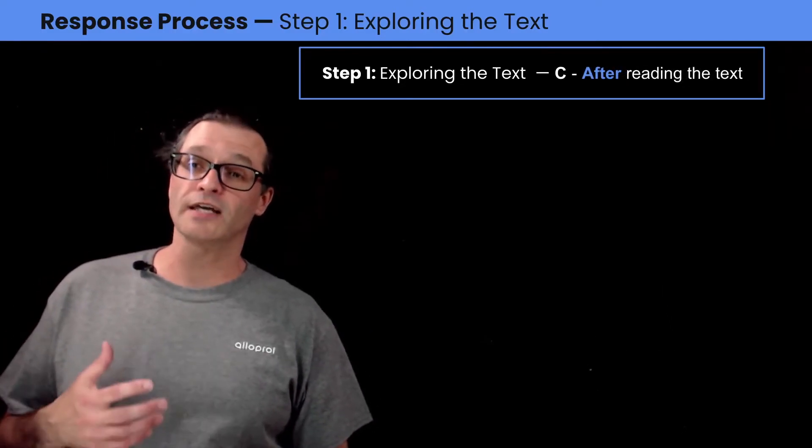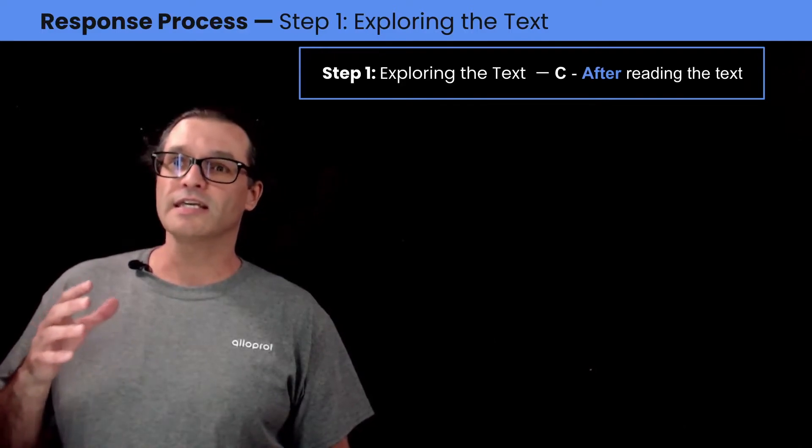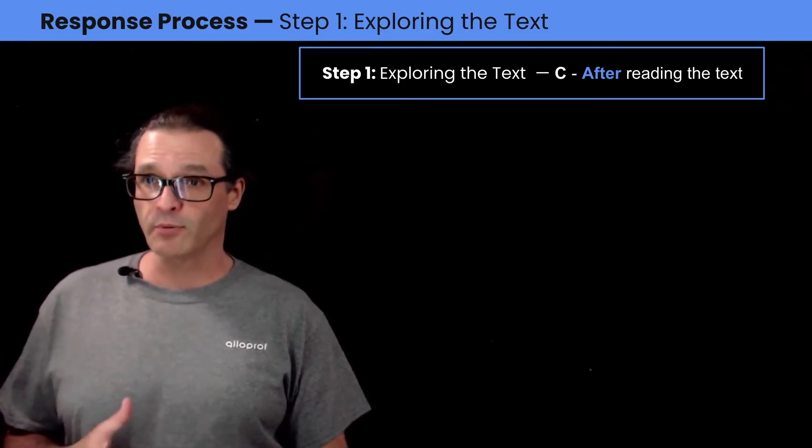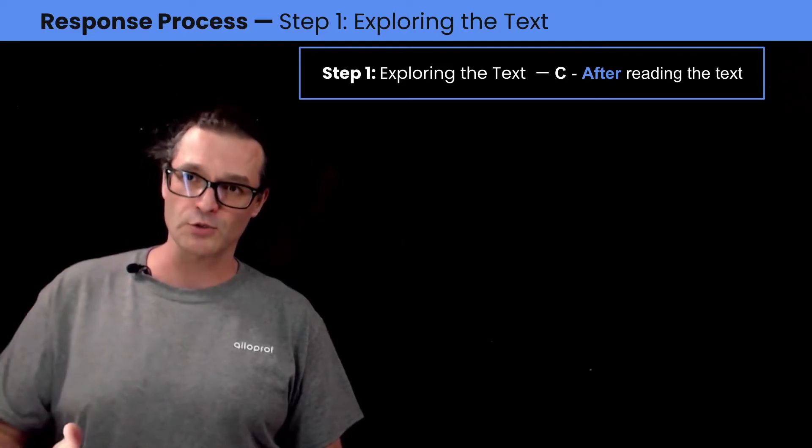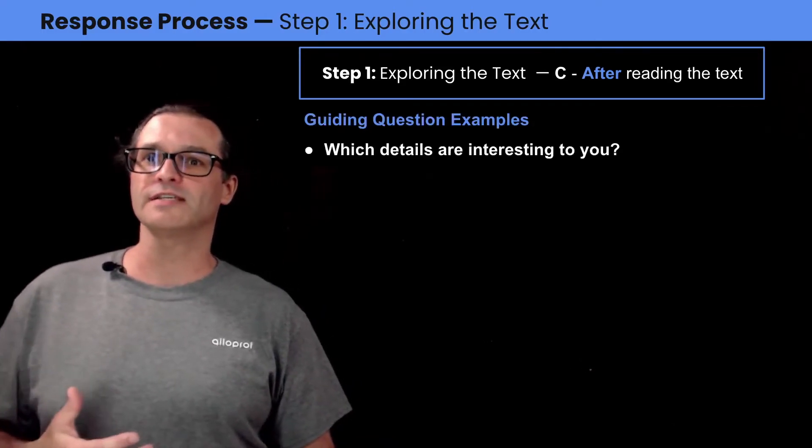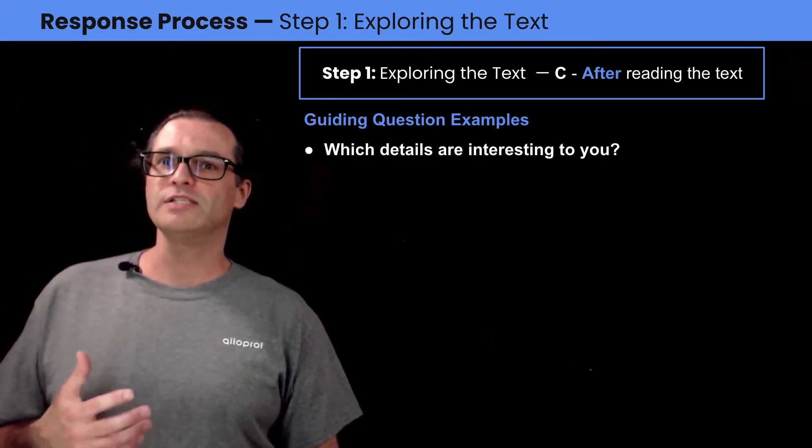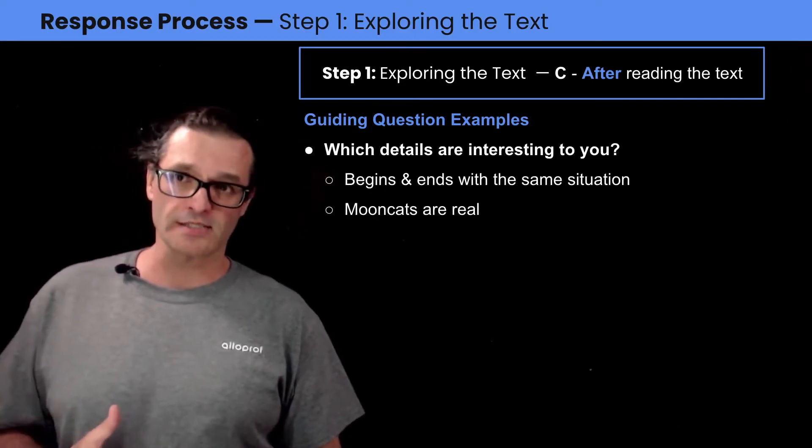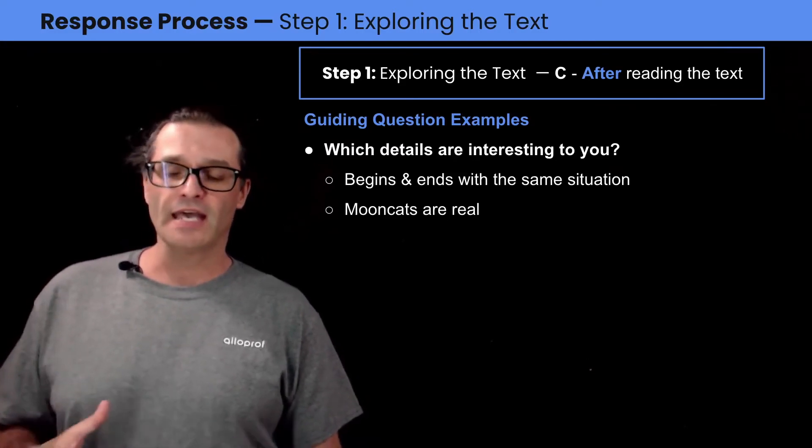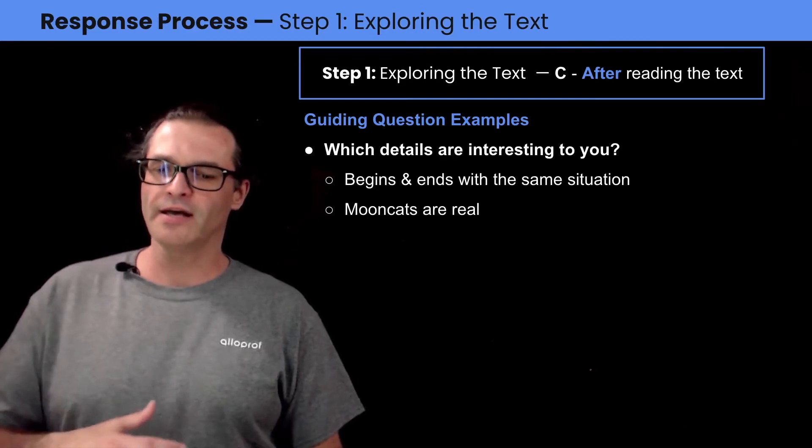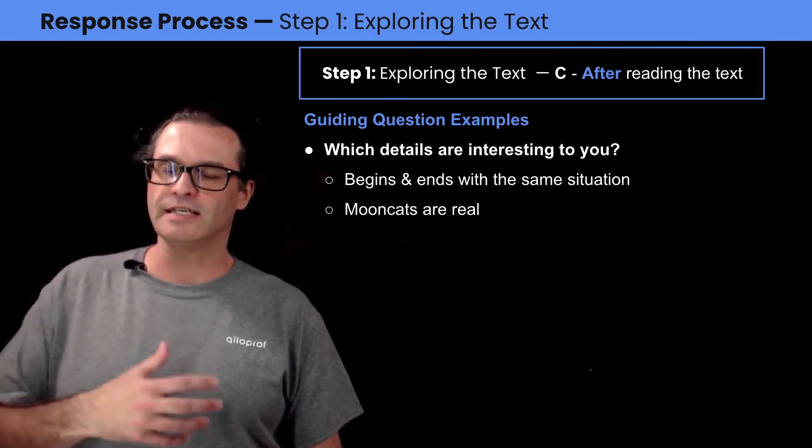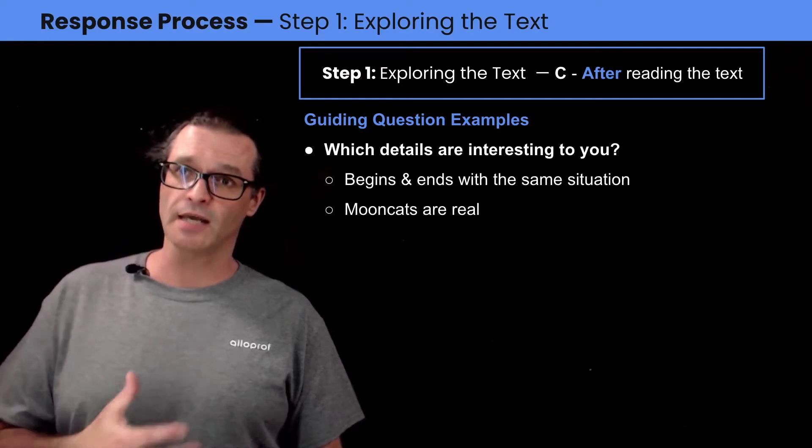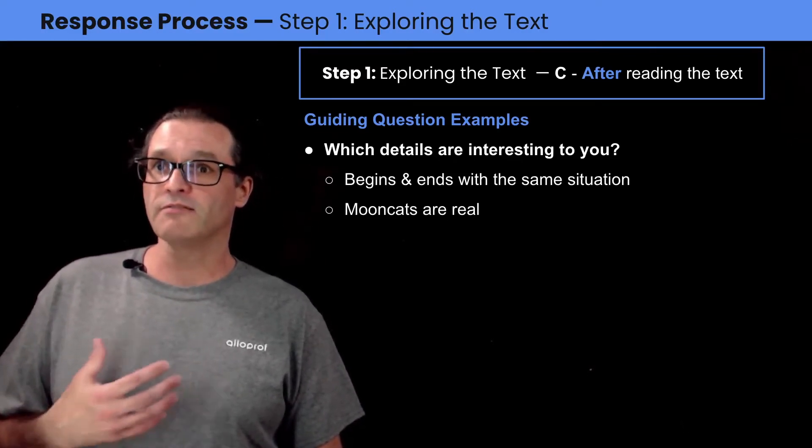After reading the text, it is time to look at the guiding questions and the prompt. Just keep in mind that guiding questions and prompts will give different answers from person to person. That is why it is very important to always refer back to the text and what happened in the story when answering them. In this story, the first example of guiding question is which details are interesting to you? Now, for me, the first detail that's interesting is that the story begins and ends the same way in the sense that it starts with astronaut Bob complaining that he has no bars and he can't communicate. And it ends exactly the same way. He's still complaining about no bars and not being able to communicate, which for me is funny because it's ironic.